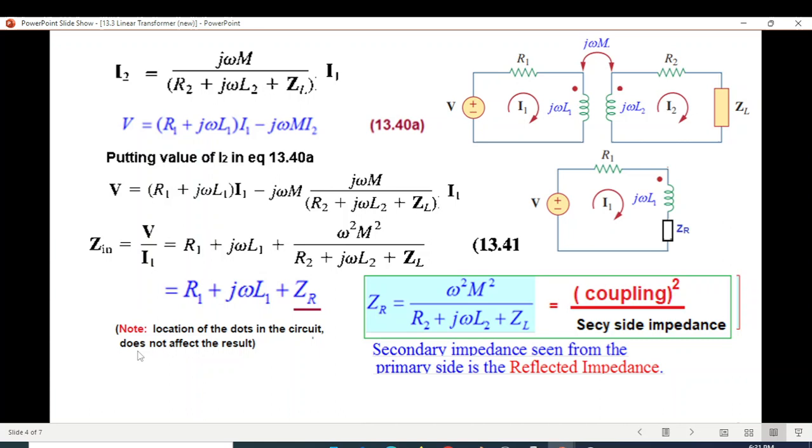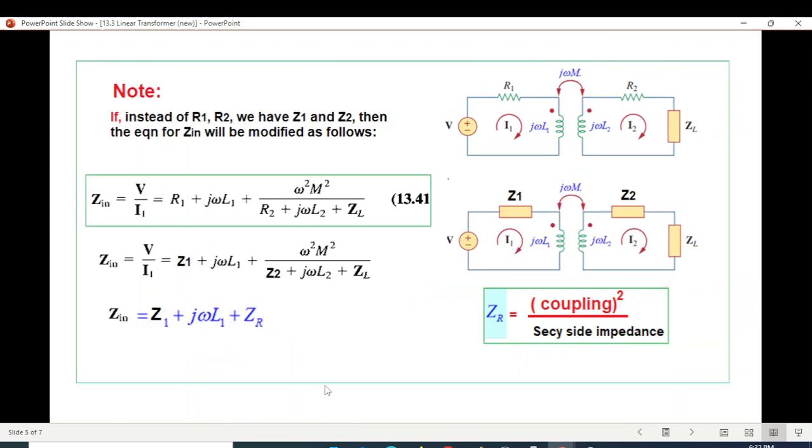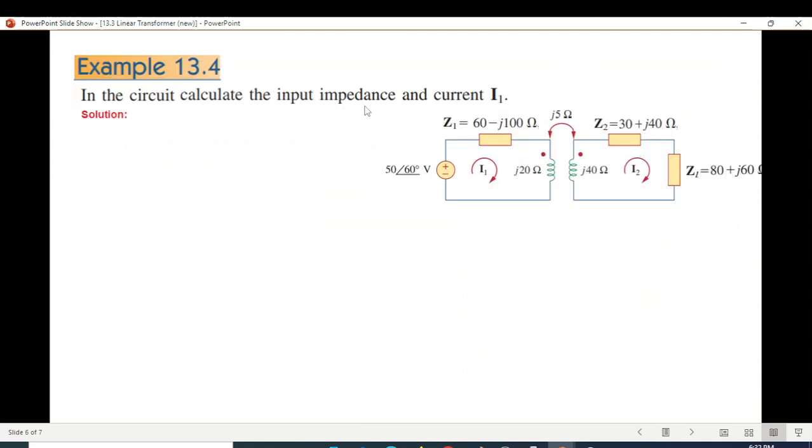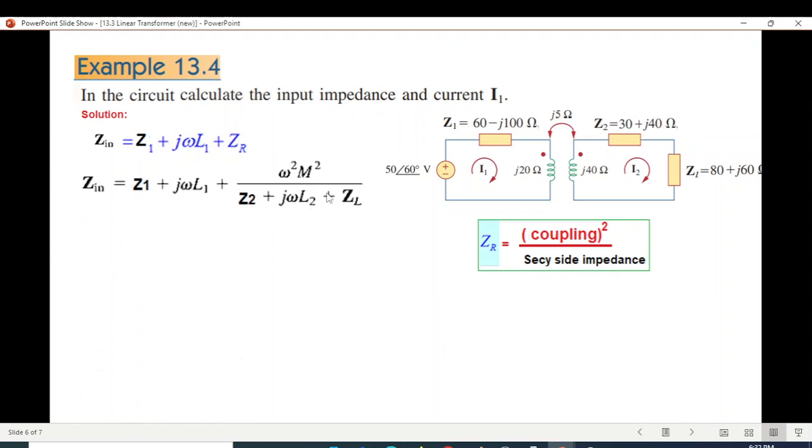The location of the dots in the circuit does not affect the result. In the question, instead of R1 the question is given as Z1, and instead of R2 it's Z2. So the example is: in the circuit, calculate the input impedance and current I1. This is the circuit. Directly use the formula for Z in. Which is Z1 plus j omega L1 plus ZR. ZR is coupling square divided by secondary side impedance, so this is the impedance. Write the formula, and then write your values.